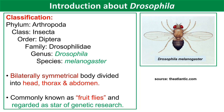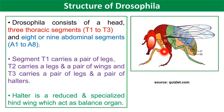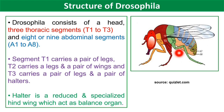Drosophila consists of a head, three thoracic segments T1 to T3, and eight or nine abdominal segments A1 to A8. Segment T1 carries a pair of legs; segment T2 carries a pair of legs and a pair of wings; and T3 carries a pair of legs and a pair of halteres. A haltere is a reduced and specialized hindwing which functions as a balancing organ.